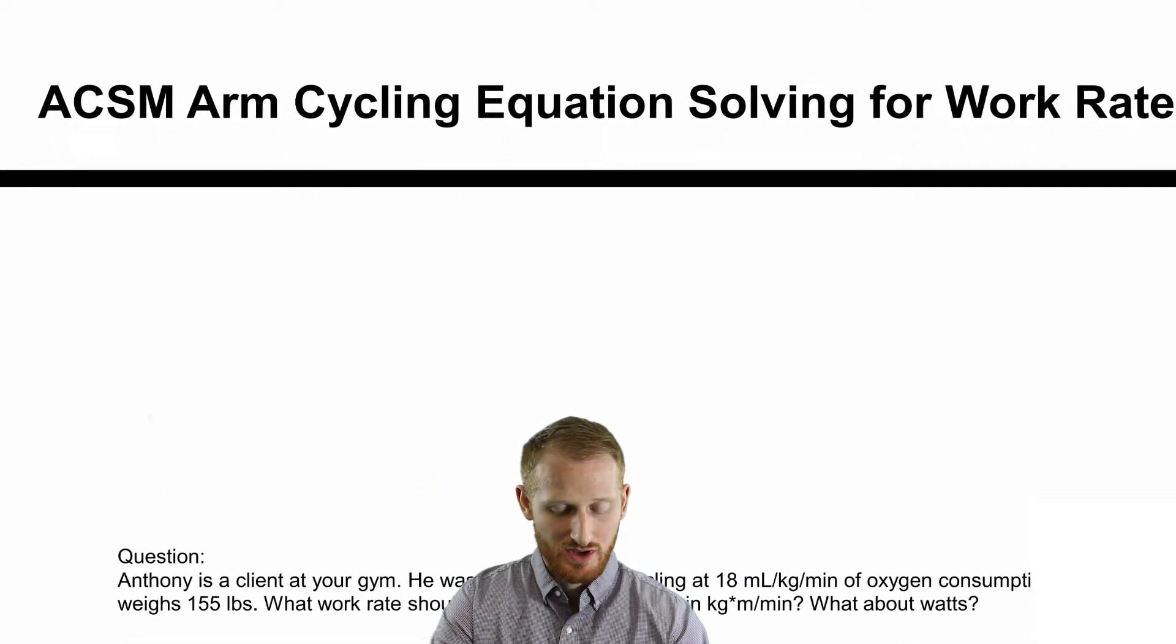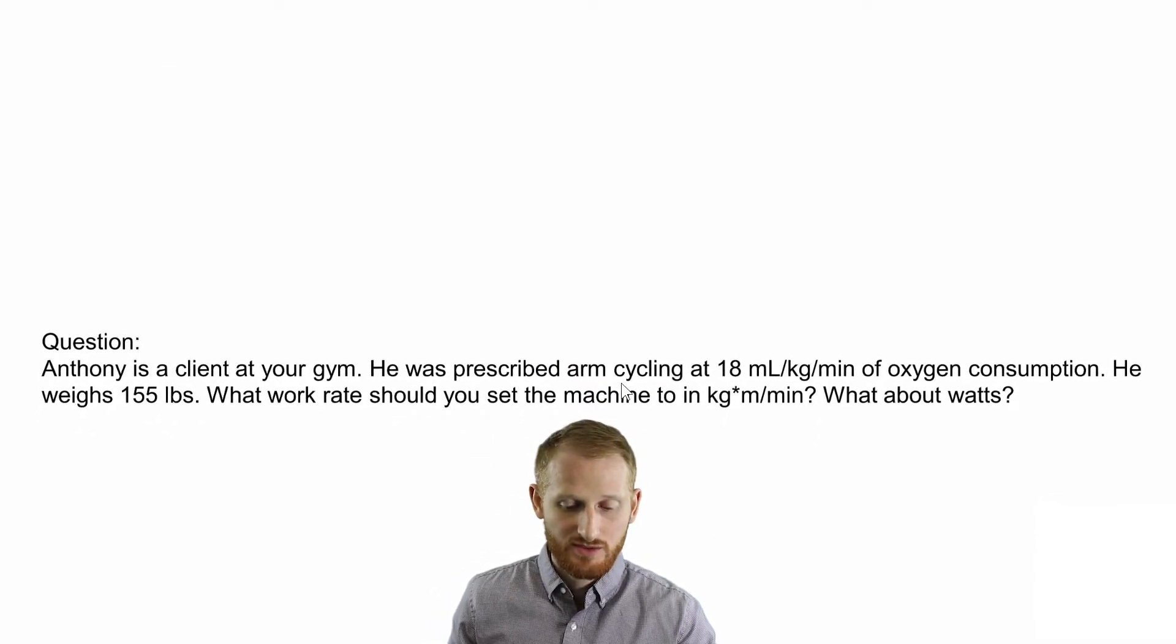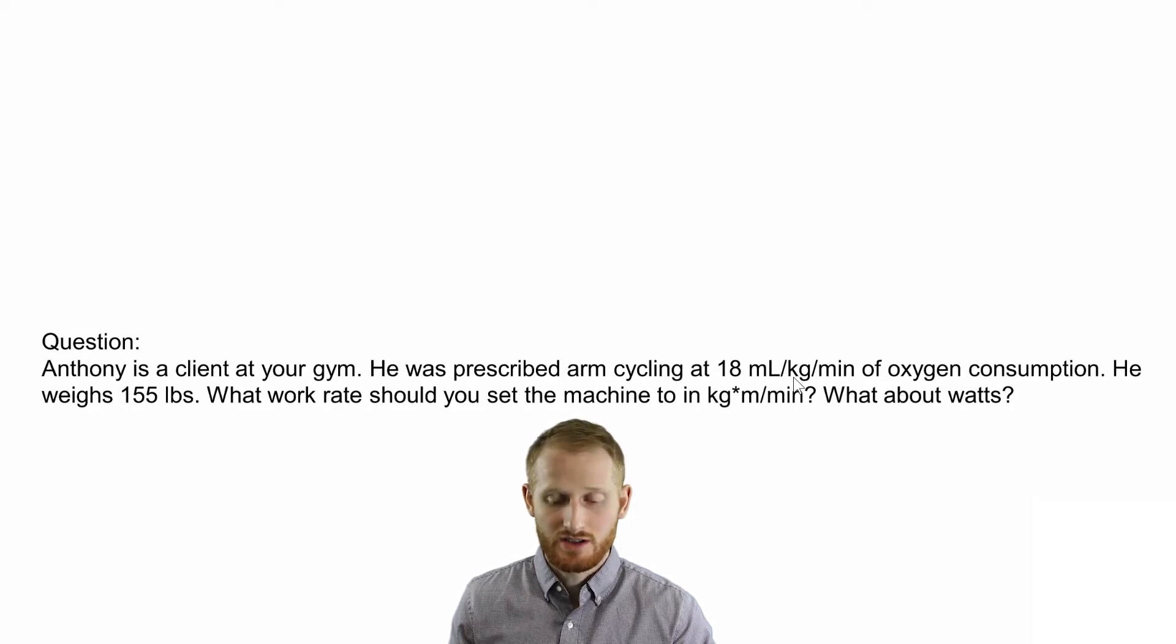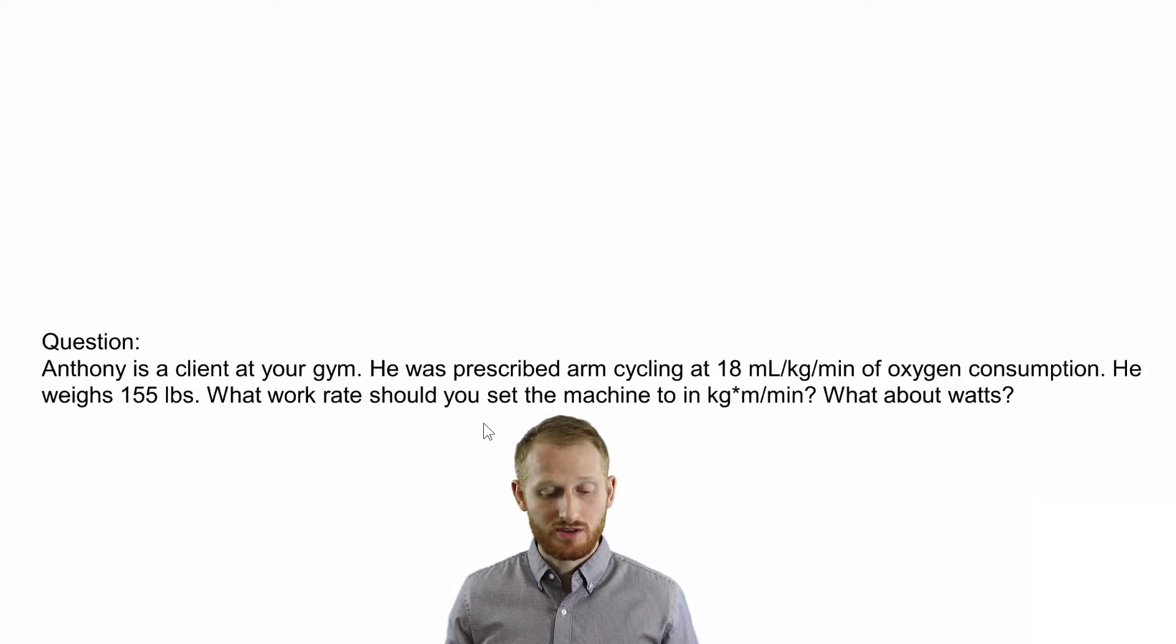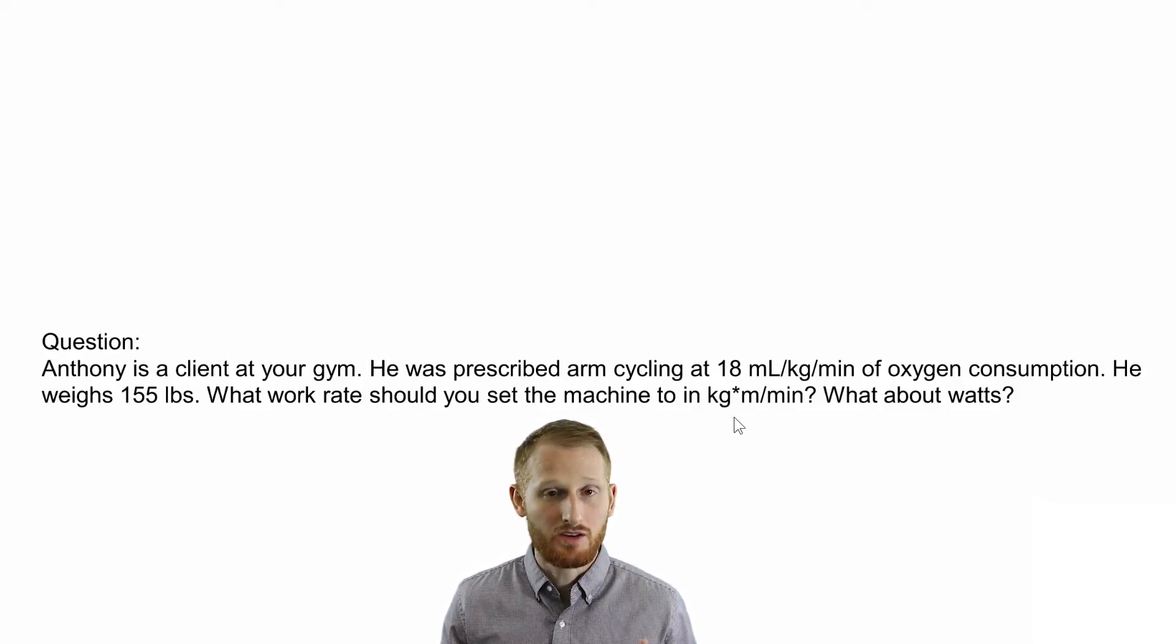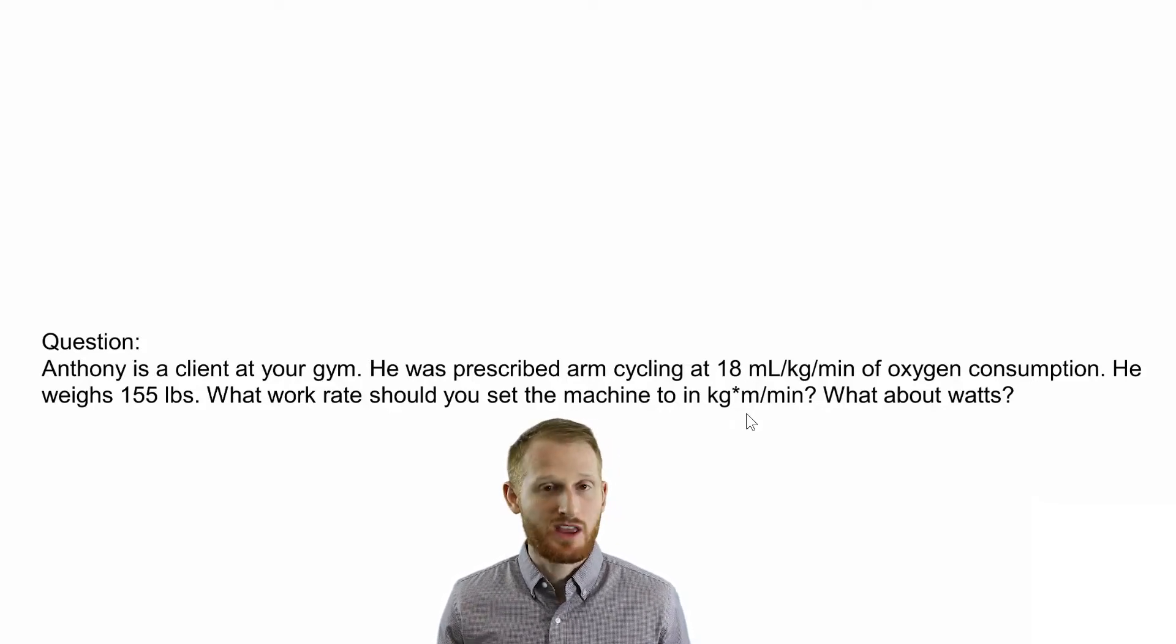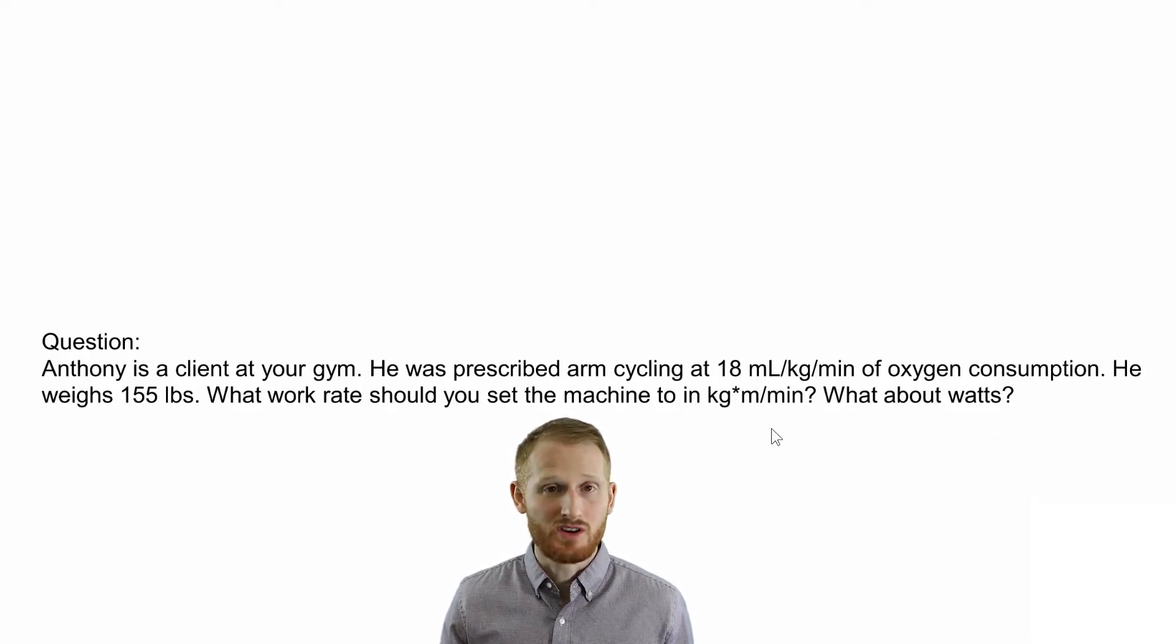So let's use a question to help us frame this. Anthony is a client at your gym. He was prescribed an arm cycling exercise at 18 milliliters of oxygen per kilogram body mass per minute and he weighs 155 pounds. What work rate should you set the machine at in units of kilogram meters per minute in order for him to exercise at this 18 mL per kg per minute that was prescribed? And then what would that be in watts? Because most machines are going to use watts, they're not going to use the kilogram meters per minute that the ACSM equations use.